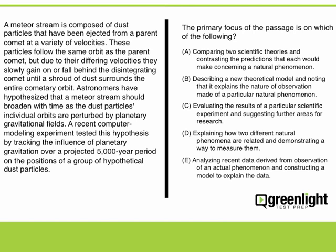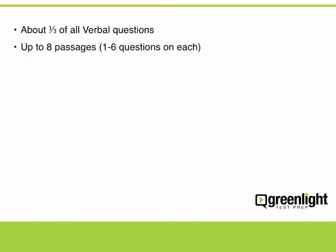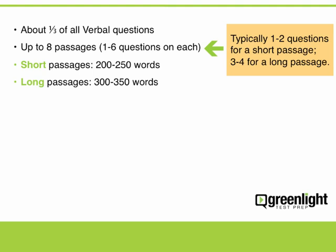Please note that if the passage is too long to fit on the screen, a scroll bar will allow you to scroll the text up and down. You'll only see one question at a time. Typically, you see one to two questions for a short reading passage, and three to four questions for a longer passage. Some passages are short, perhaps only 12 lines long, and other passages are quite long, with over 50 lines of text to read and process.